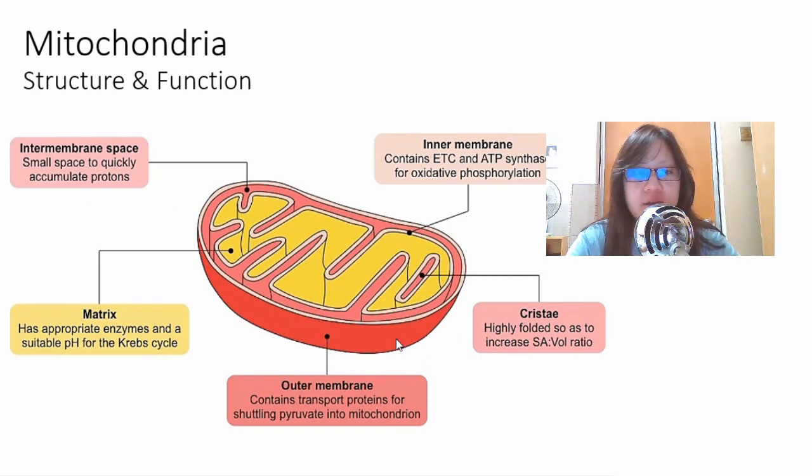And that's it. That is the structure and function of mitochondria. There is the outer inner membrane, the intermembrane space, the matrix and the highly folded cristae in order to increase surface area to volume ratio. That's all for mitochondria. See you next video.